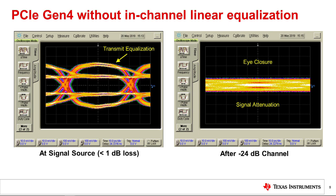This incoming signal is close to the PCIe Gen 4 limit in terms of channel losses. So even though the eye is completely closed, it is expected that a PCIe receiver would be able to correctly compensate for the attenuation and recover data from the incoming signal.